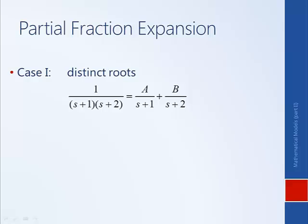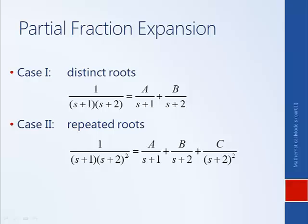Case 1 is when we have simple roots that are distinct. In the previous case we had roots of plus 2j and minus 2j; here we have two distinct roots of minus 1 and minus 2. The numerators are just simple constants. When we have repeated roots — for example, two roots at minus 2 — the form of the partial fraction expansion is slightly different. In addition to having a constant over s plus 2, we also have a constant over s plus 2 squared. If we had even higher-order roots, such as s plus 2 to the cubed, then we would additionally have a term with a denominator of s plus 2 cubed.